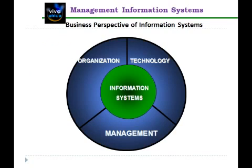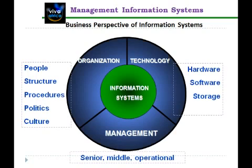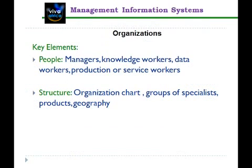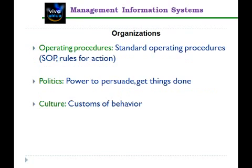From a business perspective, the key components of an information system are the process, the people, and the information technology. In a larger sense, you can see them in three phases: the organization, the technology, and then management. By organization I mean people, structure, processes, procedures, politics and culture. Technology includes hardware, storage, and networks. The combination of technology and organization also determines at what level these information systems operate — senior, middle, and operational levels.